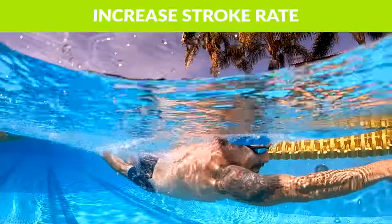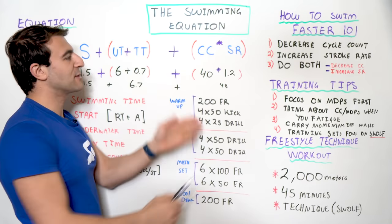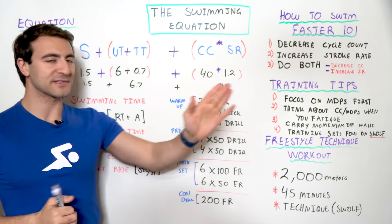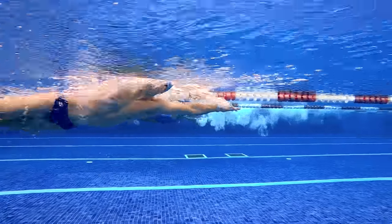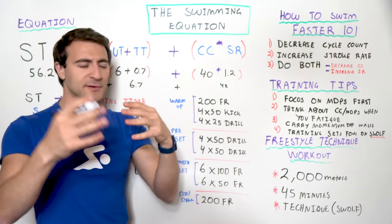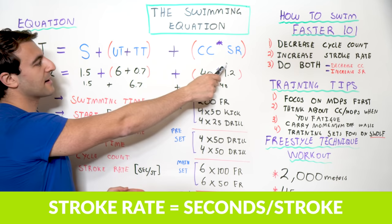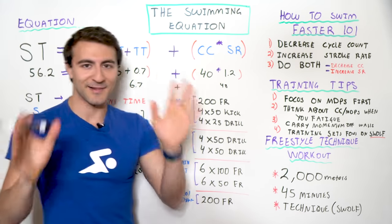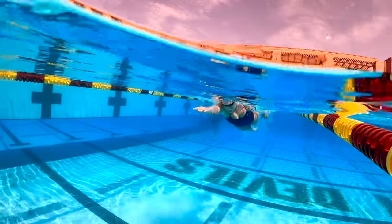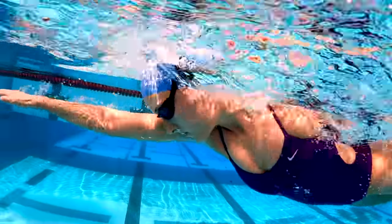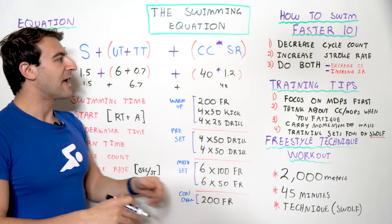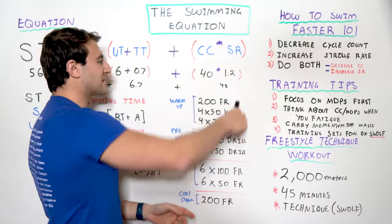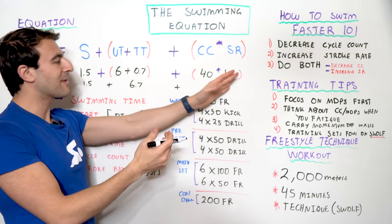Here's another way you can get faster: you can increase your stroke rate. So instead of worrying about your cycle count, you take the same number of strokes but you do them faster. We're going to keep the 40 the same — 18 strokes on the way down, 22 on the way back — but we're going to do it with a smaller stroke rate value. Remember, stroke rate is seconds per stroke, so a smaller number means faster. Sometimes this number is represented as the inverse, so make sure you pay attention to the equation and the numbers. If you just move your arms faster through the water, you're probably going to end up taking more strokes, so your cycle count is also going to go up. You can see how they're inversely related — one goes up, the other one goes down.